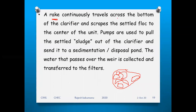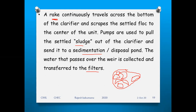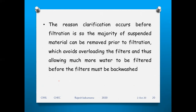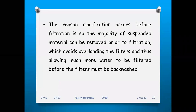A rake continuously travels across the bottom of the clarifier and scrapes the settled floc to the center of the unit. Pumps are used to pull the settled sludge out of the clarifier and send it to the sedimentation or disposal pond. The water that passes over the weir is collected and transferred to the filters. Clarification occurs before filtration so the majority of suspended materials can be removed prior to filtration, avoiding overloading of the filters.